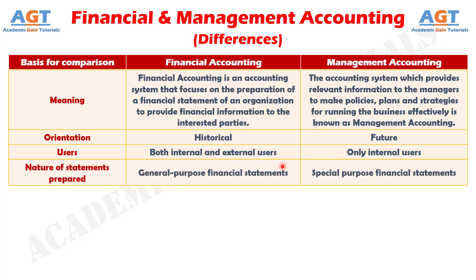Number four: Financial Accounting generates information and reports that are public in nature. These are general purpose financial statements that serve the informational needs of multiple users. It keeps a track of the financial performance of the entire firm and not just of an individual segment or department. Whereas, in Management Accounting, reports are prepared for private use by the company's management and so they are confidential. These are specific purpose reports meant to determine the performance of entities, product lines and departments. Data produced comprise facts, estimates, analysis, forecasts, budgets, etc.